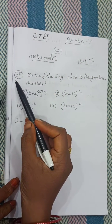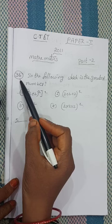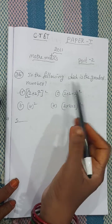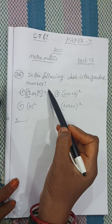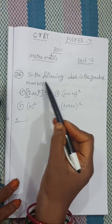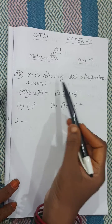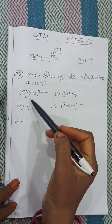Today's question is number 36: In the following, which is the greatest number?